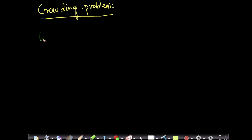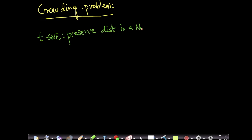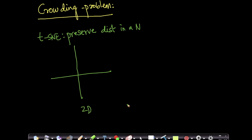t-SNE literally tries to preserve the distances in a neighborhood — I will just call neighborhood as capital M. But this could create problems. Let me give you a very simple example. Let us assume I have two-dimensional data, and I want to project this into 1D using t-SNE.